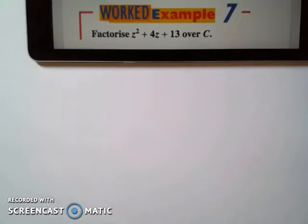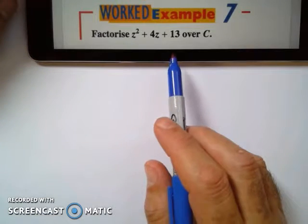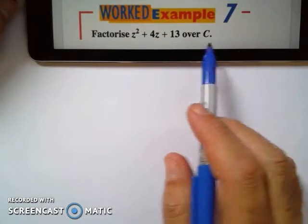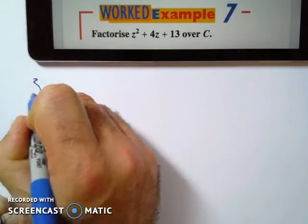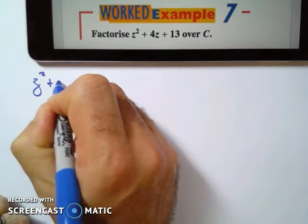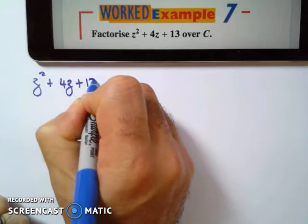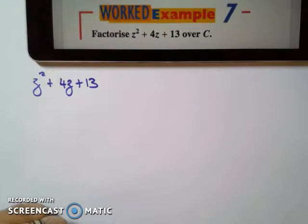Work Example 7 asks us to factorize z squared plus 4z plus 13 over C. Let's for a moment forget about over C and we say z squared plus 4z plus 13 and we just factorize that.